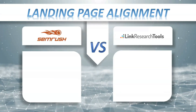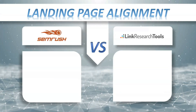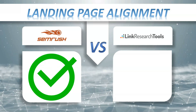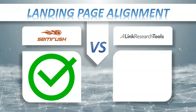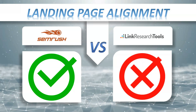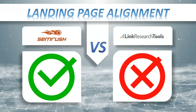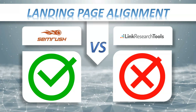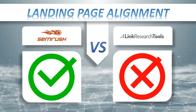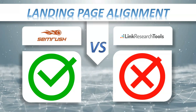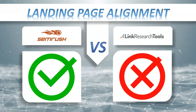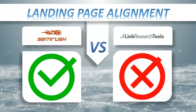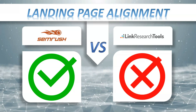Landing page alignment: SEMrush yes, Link Research Tools no. When you're tracking your SEO or PPC efforts, you'll want to know what pages on your site are performing the best. Seeing your competitors' top performing landing pages can also help you understand what works well with your audience.